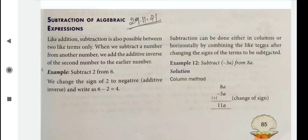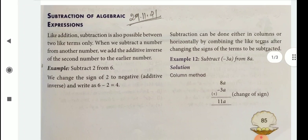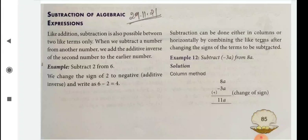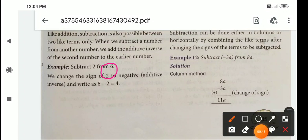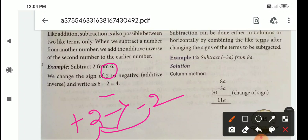Subtract 2 from 6. From 6 means we write first 6. So 6 minus 2 is 4. Here additive inverse of 2 is minus 2. Plus 2 additive inverse is minus 2, and minus 2 additive inverse is plus 2. Clear?